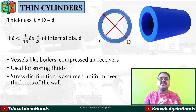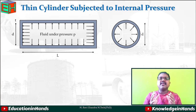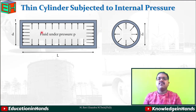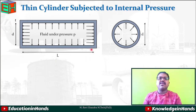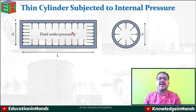Now let us see this thin cylinder when subjected to internal pressure. Whatever fluid we are storing in the thin cylinder is kept under certain pressure, so it is exerting some pressure on the internal walls of the cylinder. I am considering a thin cylinder subjected to fluid under pressure P on all the walls of the cylinder. The cylinder has internal diameter D, thickness T, and length L. When we consider this kind of cylinder subjected to internal pressure, there may be a chance of failure in the cylinder when the internal pressure P exceeds the capacity of the cylinder.